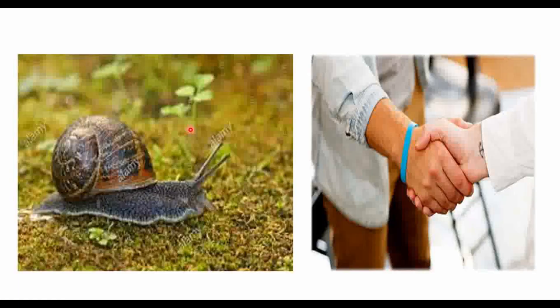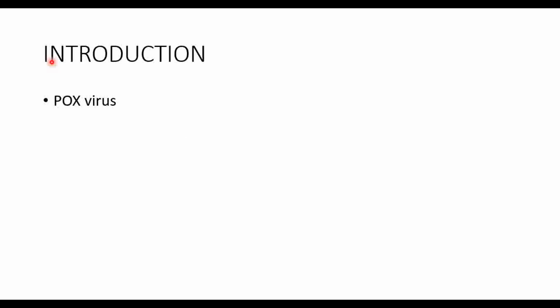Today we are discussing molluscum contagiosum. Contagious means it spreads by skin-to-skin contact, and 'molluscum' refers to the dome-shaped lesion it produces. Molluscum contagiosum is a viral disease — specifically a DNA virus — belonging to the family Poxviridae, under the genus Molluscipoxvirus. A peculiar fact: it is the largest DNA virus infecting humans.